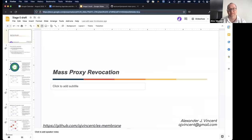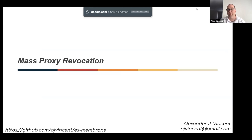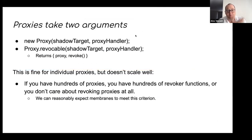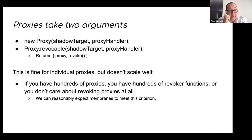I do believe that Jack and Mark are the champions and I'm just the author slash invited expert trying to deliver this idea. So, proxies currently take two arguments: there's a shadow target for tracking the various properties of proxies and the frozen state, sealed state — I'm sorry, extensible state — of a proxy, and the proxy handler which implements the traps.